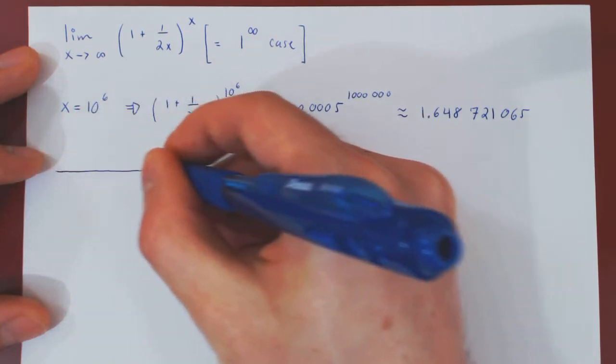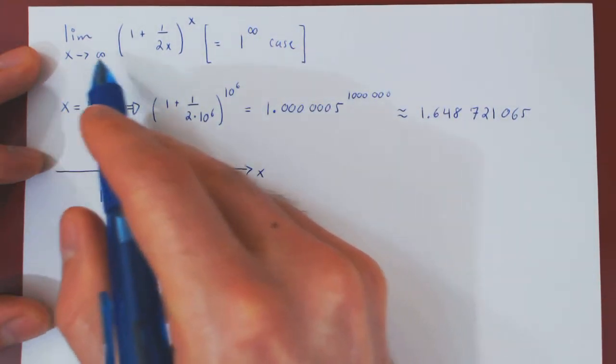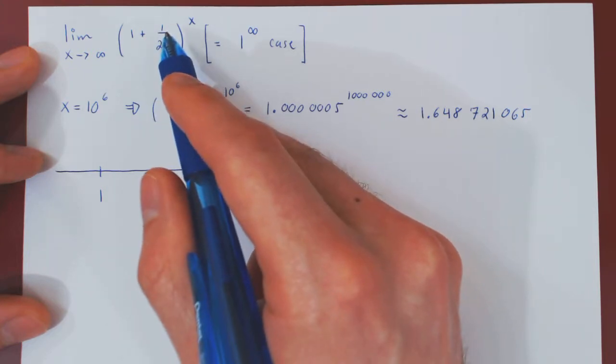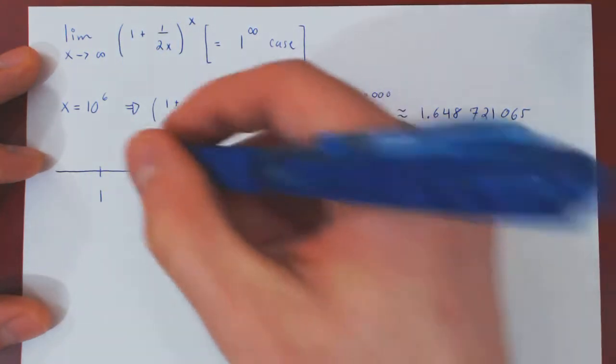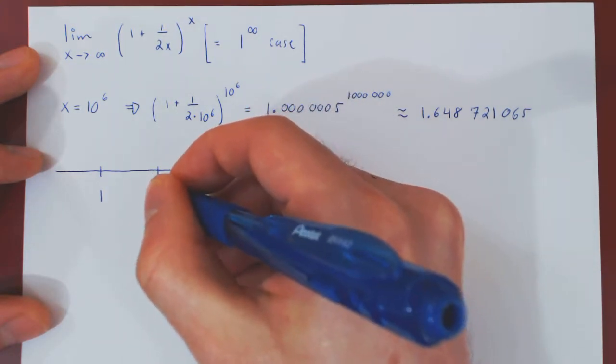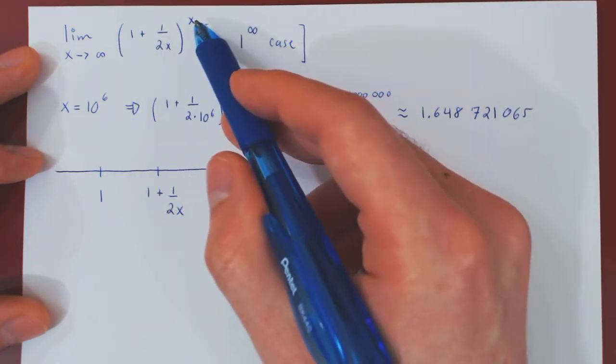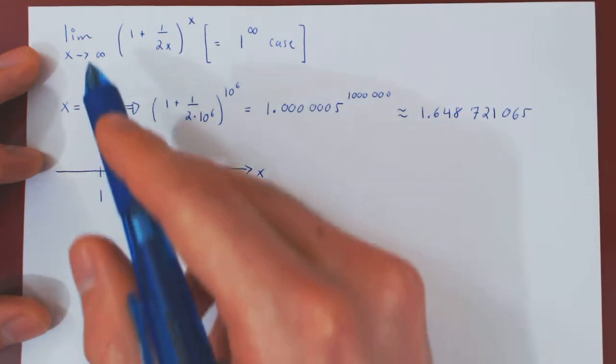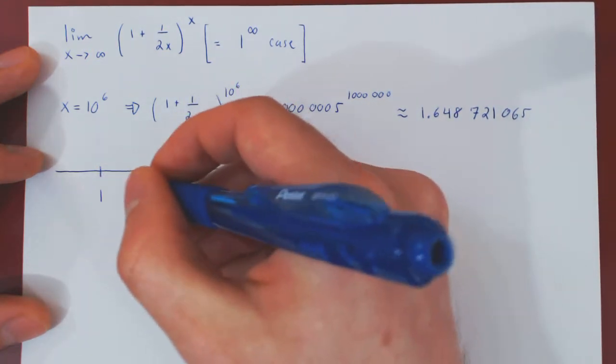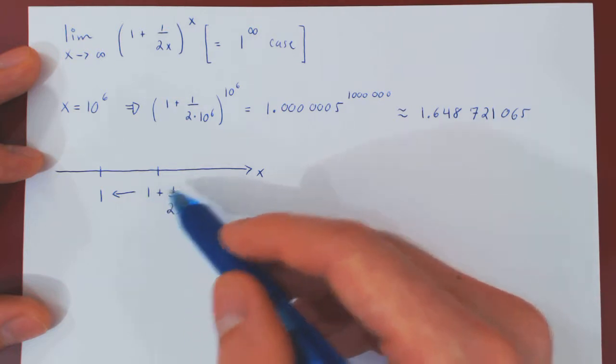And we can give a slightly more general argument that will support what's happening here. If we look at the x-axis, the point of interest here is 1. Now, as x is positive, no matter how large x is, 1 over 2x will always be positive. It will be very small but still positive, which means 1 plus 1 over 2x is a positive number and is slightly bigger than 1.